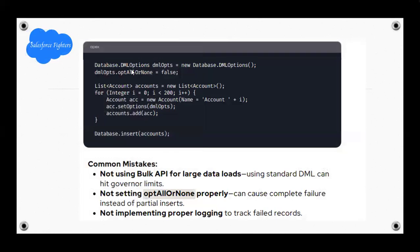Database DML options: List accounts = new List. Database.insert(accounts). Common mistakes: not using the Bulk API for large data loads — using standard DML can hit governor limits. Not setting the allOrNone option properly can cause complete failure instead of partial insert. Not implementing proper logging to track failed records.